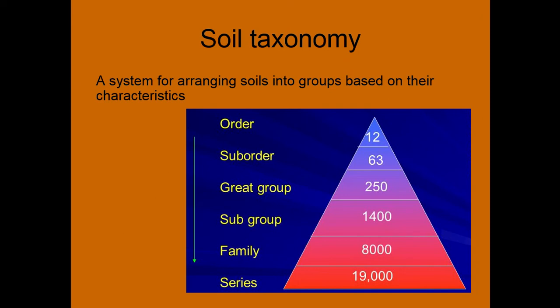So it starts with the order — we have 12 orders — then goes to the suborders, so we have 63 suborders, 250 great groups, 1,400 subgroups, 8,000 families, and 19,000 series.